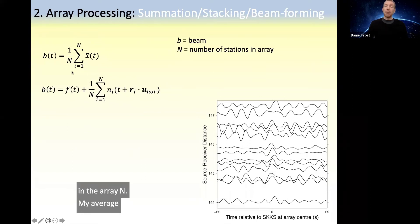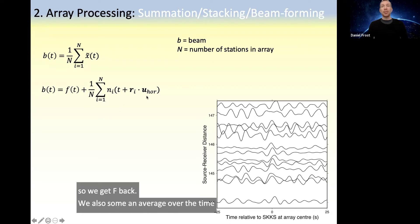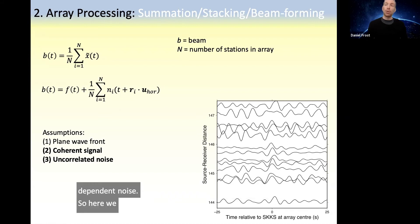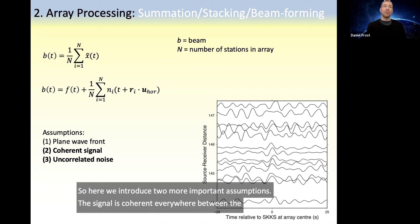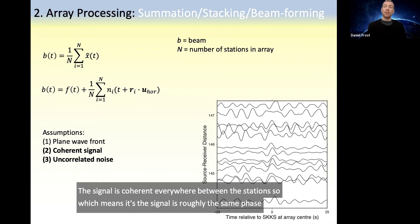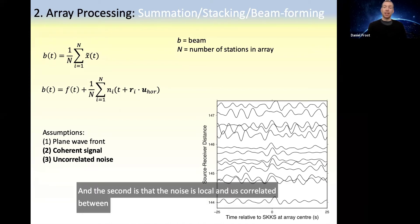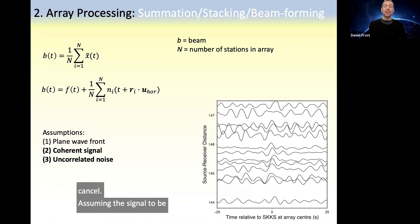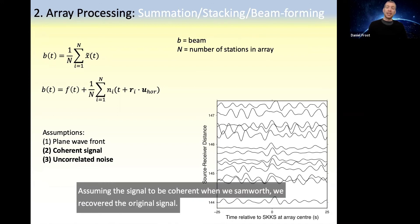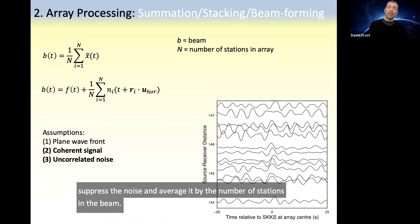We average over the signal, which is the same everywhere, so we recover F. But we also sum and average over the time-shifted station-dependent noise. Here we introduce two important assumptions. First, the signal is coherent everywhere between the stations — it is roughly the same phase at each station, and therefore it will sum constructively. Second, the noise is local and thus uncorrelated between the stations, meaning that when we stack, the noise will destructively interfere and cancel. Assuming coherent signal, when we sum we recover the original signal. Assuming uncorrelated noise, when we sum we suppress the noise, averaging it by the number of stations in the beam.